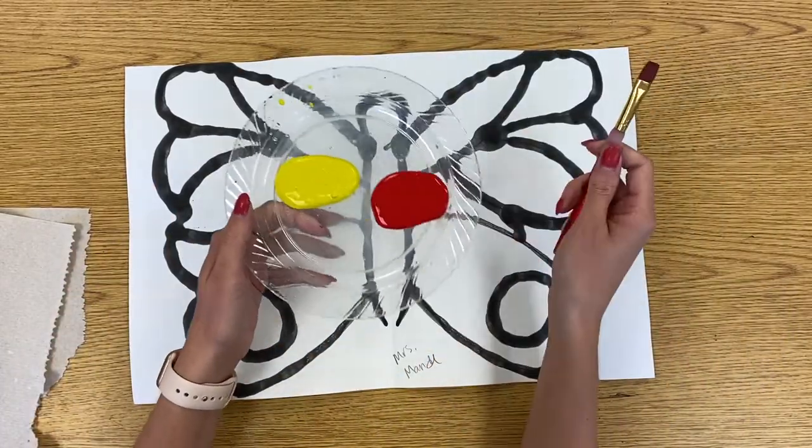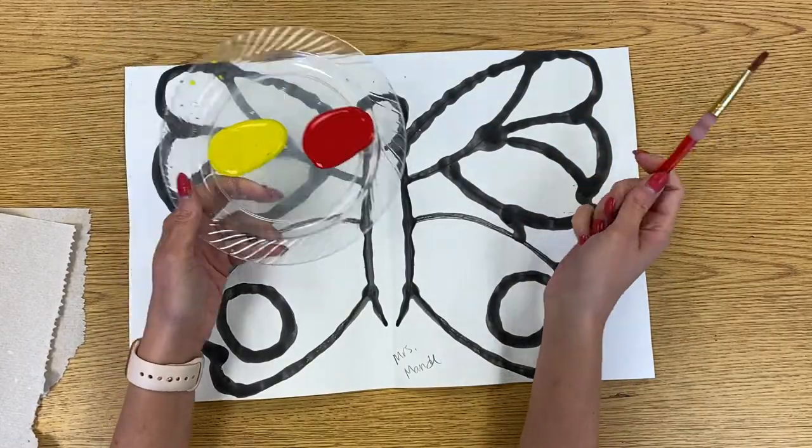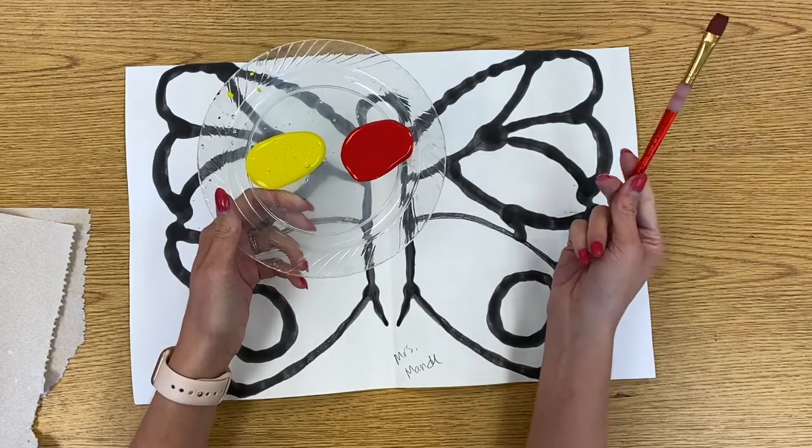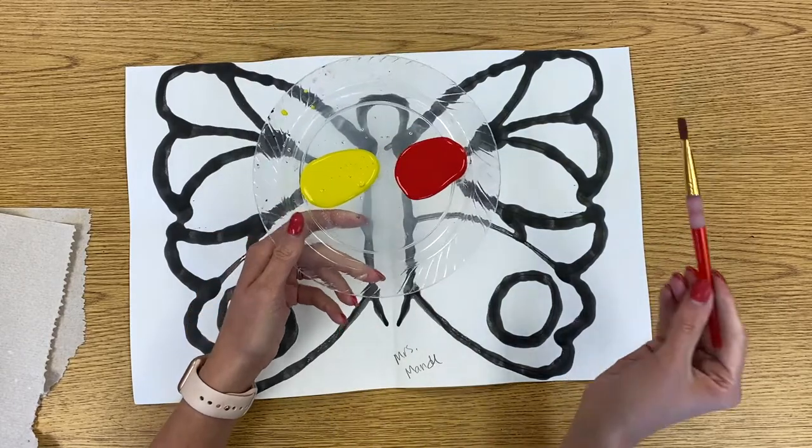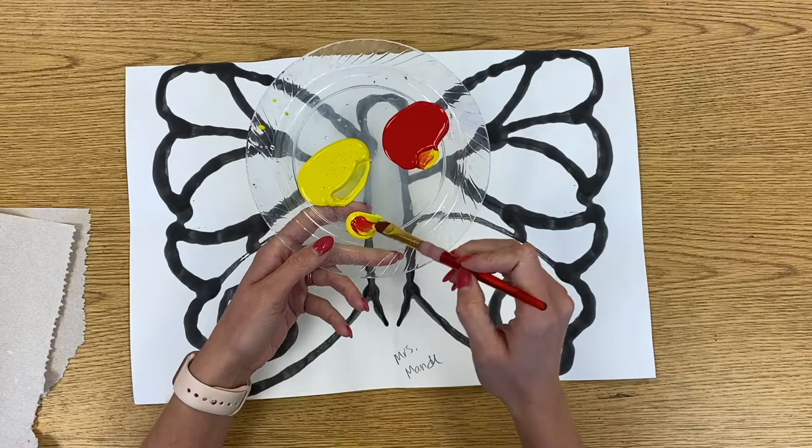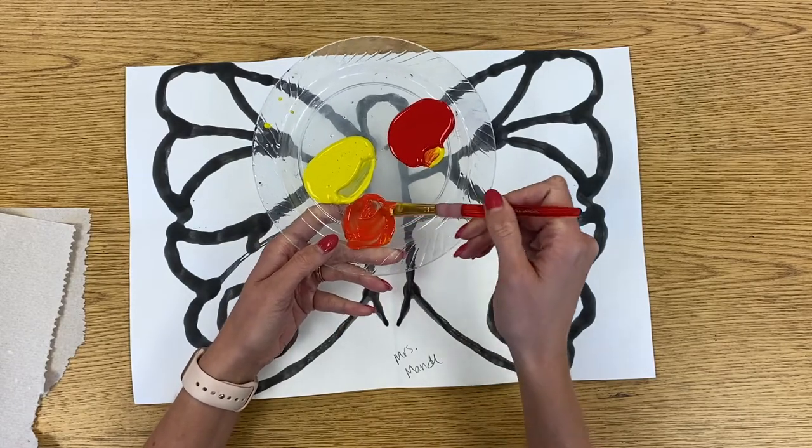And remember, monarch butterflies are always orange, black and white. So we have already learned that orange is a secondary color and we make orange by mixing yellow with red. So you can make all different kinds of orange by mixing different amounts of yellow and red together.